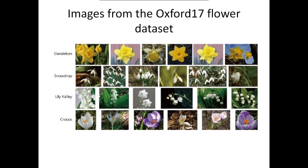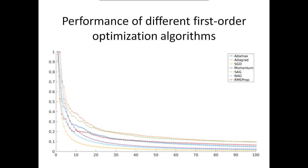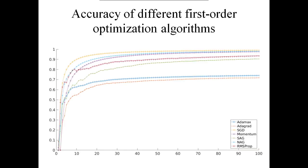Our neural network framework is implemented using TensorFlow and was trained on a single NVIDIA GeForce 2080 GPU. Performance and accuracy of different first-order optimization algorithms are shown at this slide and the next one. From the presented results it can be seen that the mentioned training methods perform differently. AdaMax, AdaGrad, and SGDA converge faster than the other methods, and Adam-based algorithms also perform well.